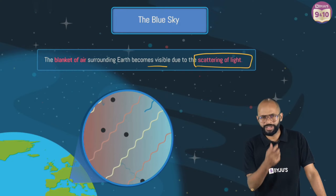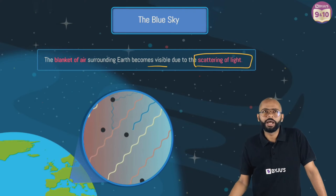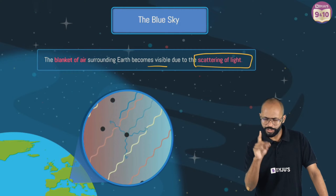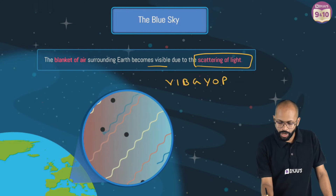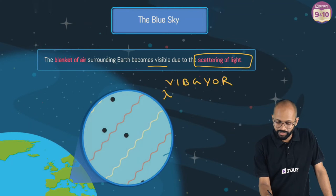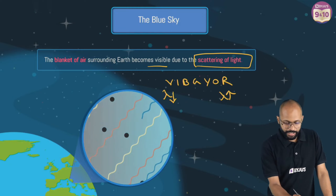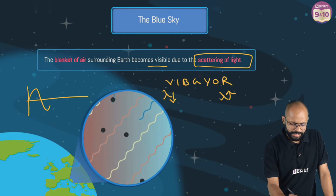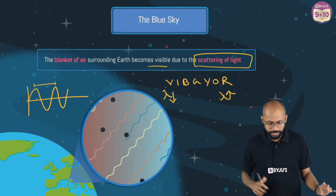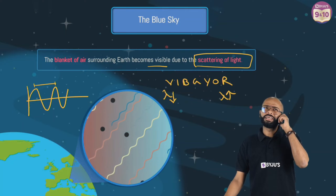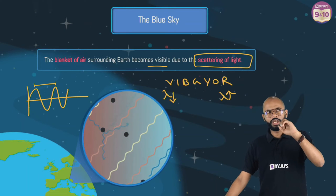But we haven't answered why blue specifically. It's VIBGYOR, but blue is in the middle — why are we seeing blue? In VIBGYOR, violet has the shortest wavelength (denoted by lambda), while red has the longest wavelength in the visible spectrum. Lambda is the distance between two crests or two troughs of a wave.